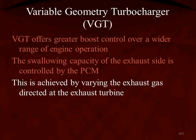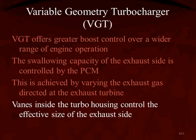This is achieved by varying the exhaust gas directed at the exhaust turbine itself. The vanes inside the turbo housing control the effective size of the exhaust passage. It doesn't change any mechanical piece internal to the turbocharger, just the effective size. A smaller effective size produces less boost, and a larger one produces greater boost. So the VGT can direct a little bit of exhaust gas at the turbine or a whole bunch of it.